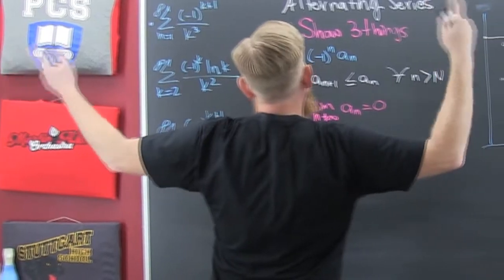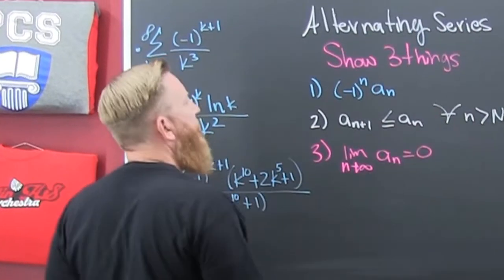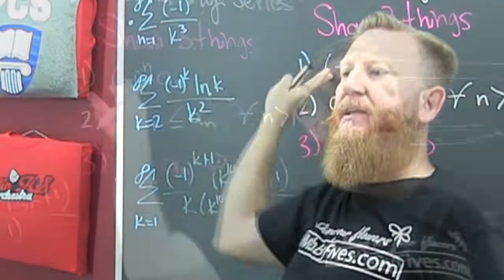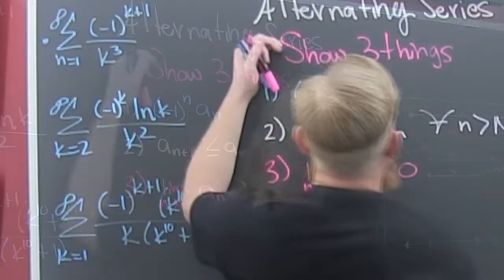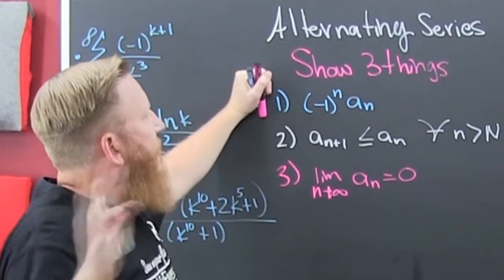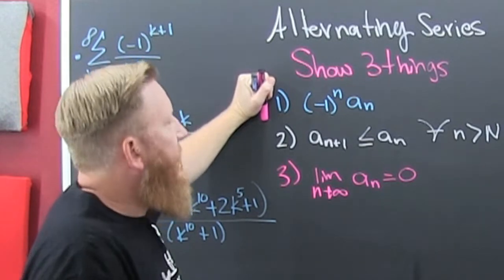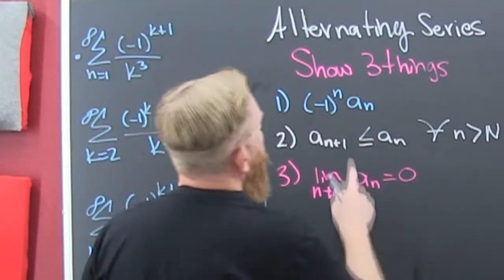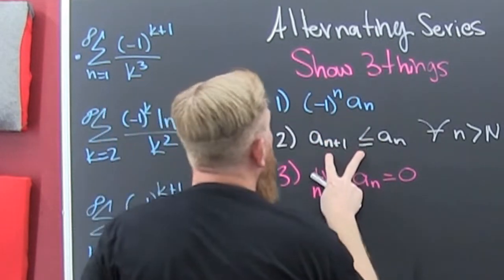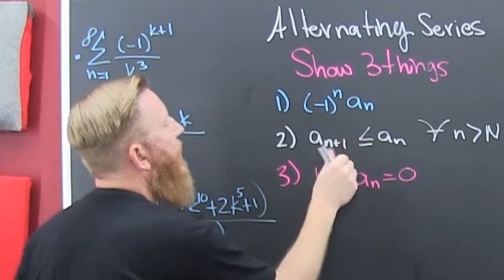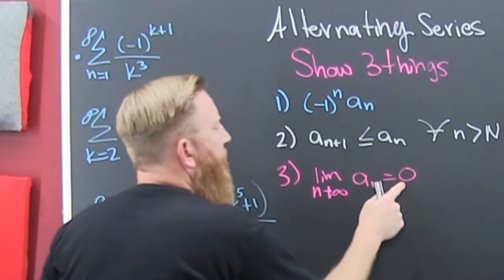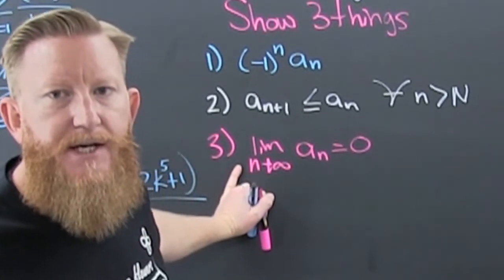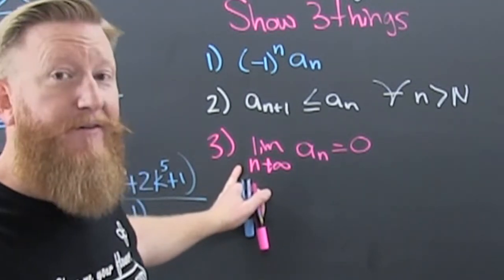When you see an alternating series, what does that mean? You need to show a few things. That means your series is all positive, then negative, then positive, then negative. So if it flip-flops from positive to negative, that's an alternating series. You need to show three things: one, that it's alternating; two, that it's decreasing — well, at least non-increasing; and three, the limit as a_n as n goes to infinity goes to zero.